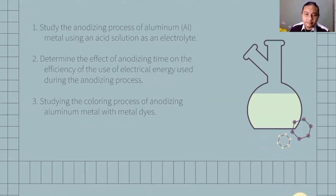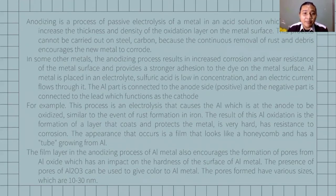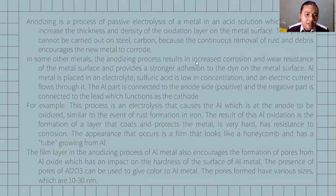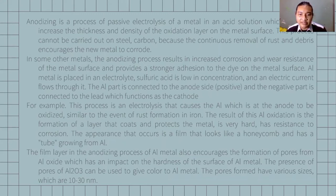The next is theoretical study. Anodizing is a process of passive electrolysis of the metal in acid solution to increase the thickness and density of the oxidation layer on the metal surface. This process cannot be carried out on steel carbon because the continuous removal of rust and debris encourages the new metal to corrode. In some other metals, the anodizing process results in increased corrosion resistance of the metal surface and provides a stronger edge addition to the tear on the metal surface. Aluminum metal is placed in electrolyte — the acid is low in concentration.